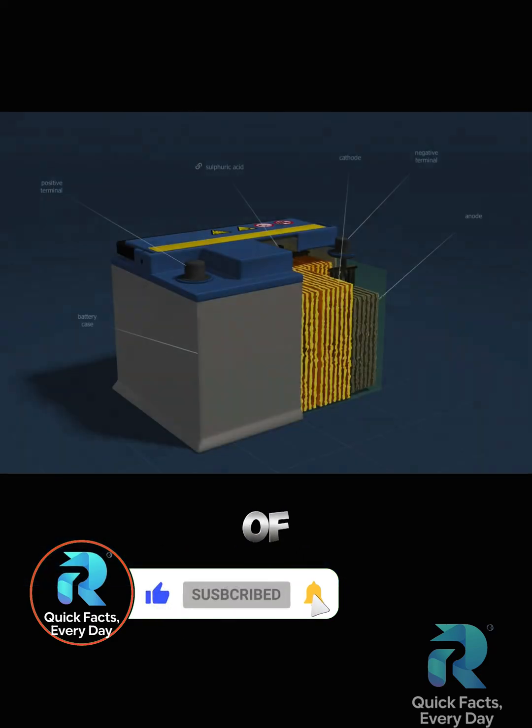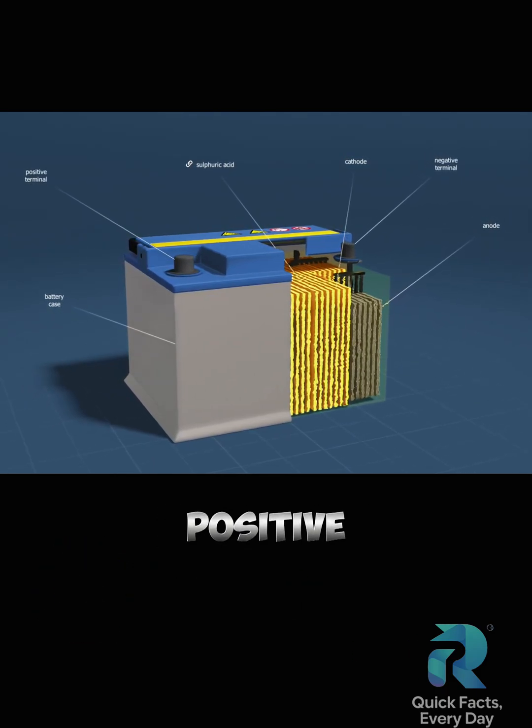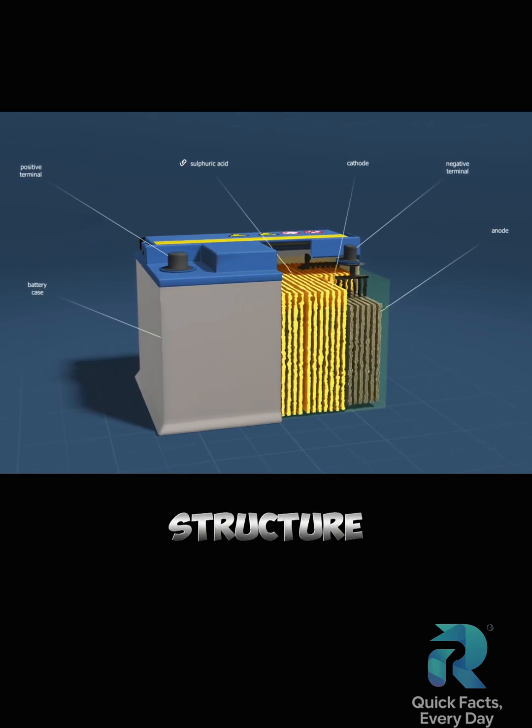The battery consists of a plastic casing and battery cells. Within these cells, positive and negative plates alternate and form a comb-like structure.